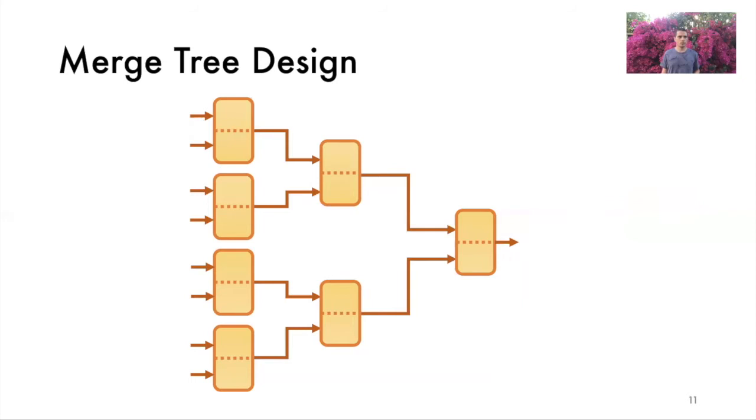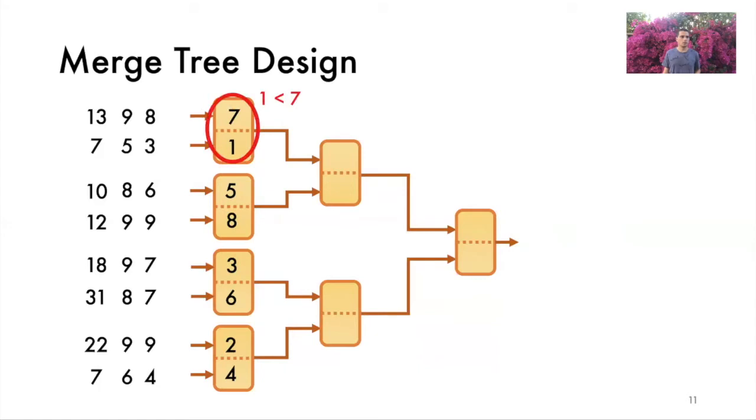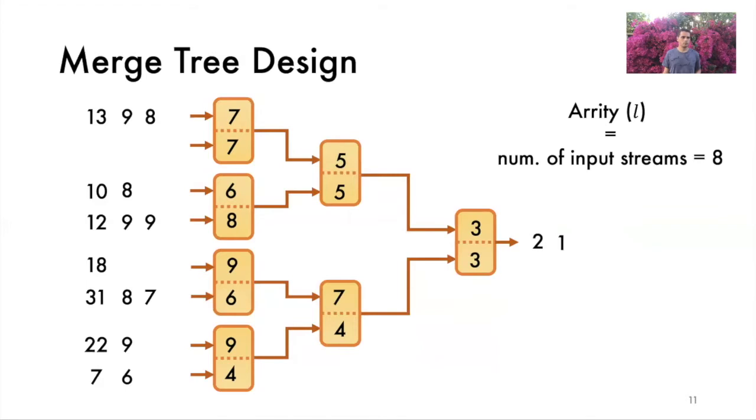A Merge Tree is a binary tree with mergers at each of its vertices. We feed the sorted arrays into the leaf mergers. The leaf nodes read the respective inputs, compare the values, and output the smaller one. We feed new values from tops of the respective input streams, and this process repeats. The Merge Tree allows us to merge more than two arrays concurrently. We define Arity as the number of arrays the Merge Tree can concurrently merge. In this example, Arity is equal to 8. We denote Arity with the lowercase l.